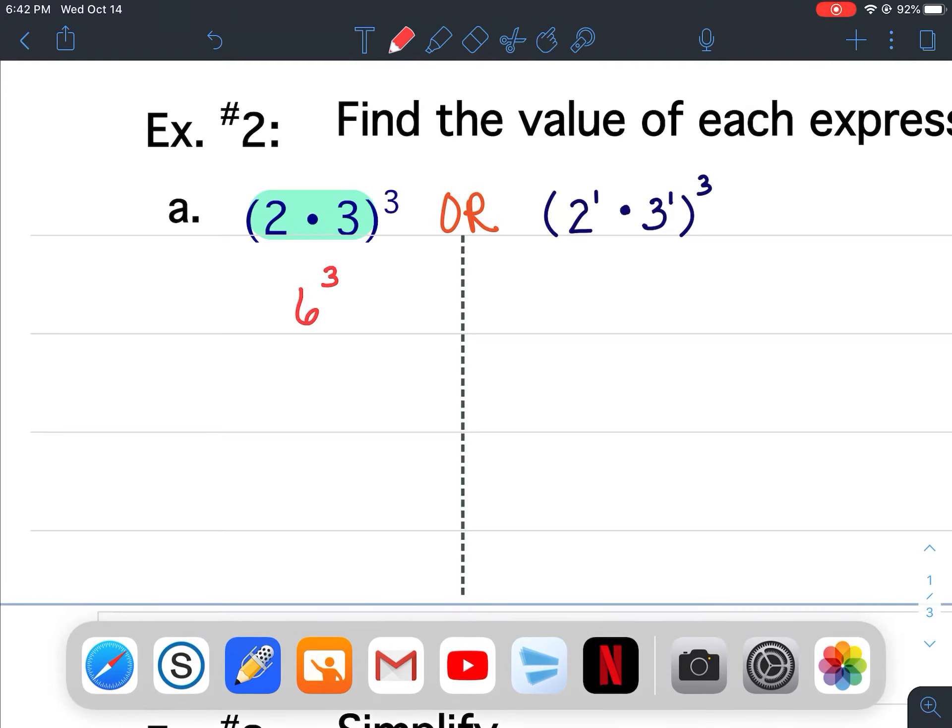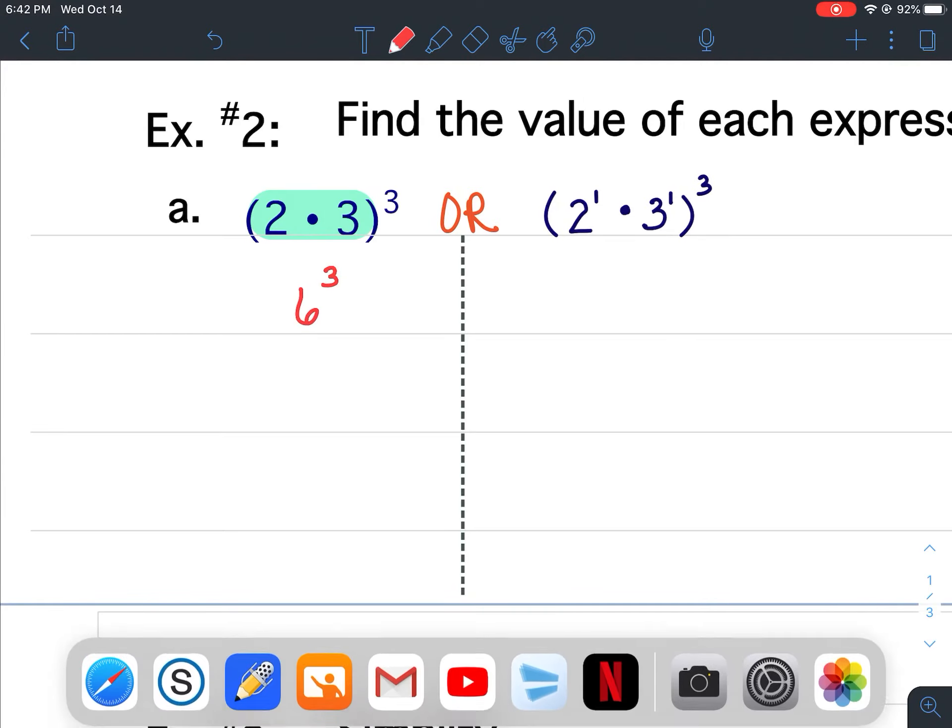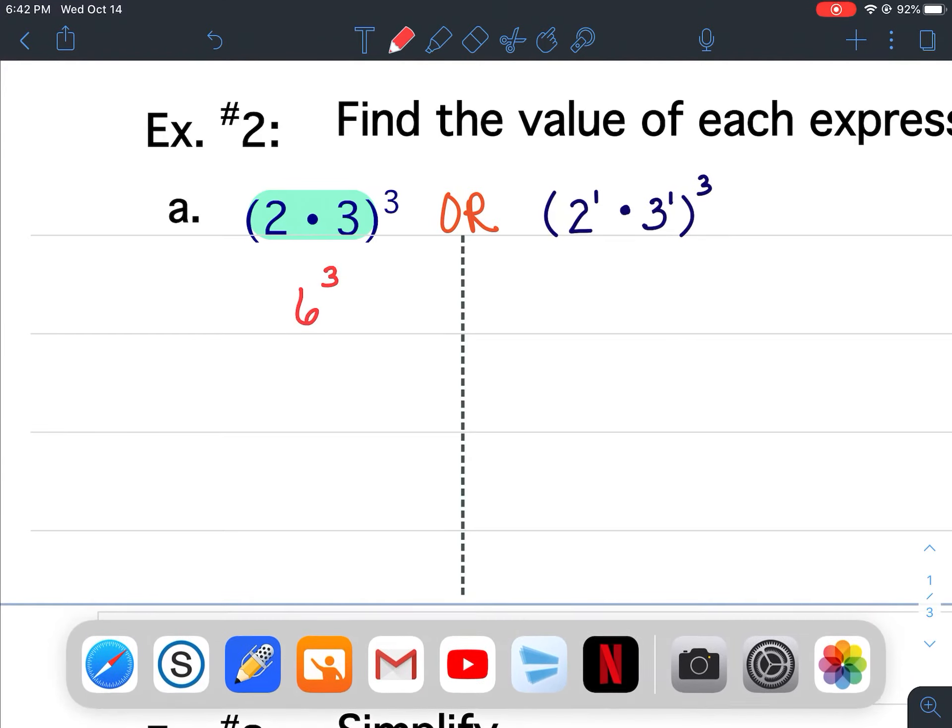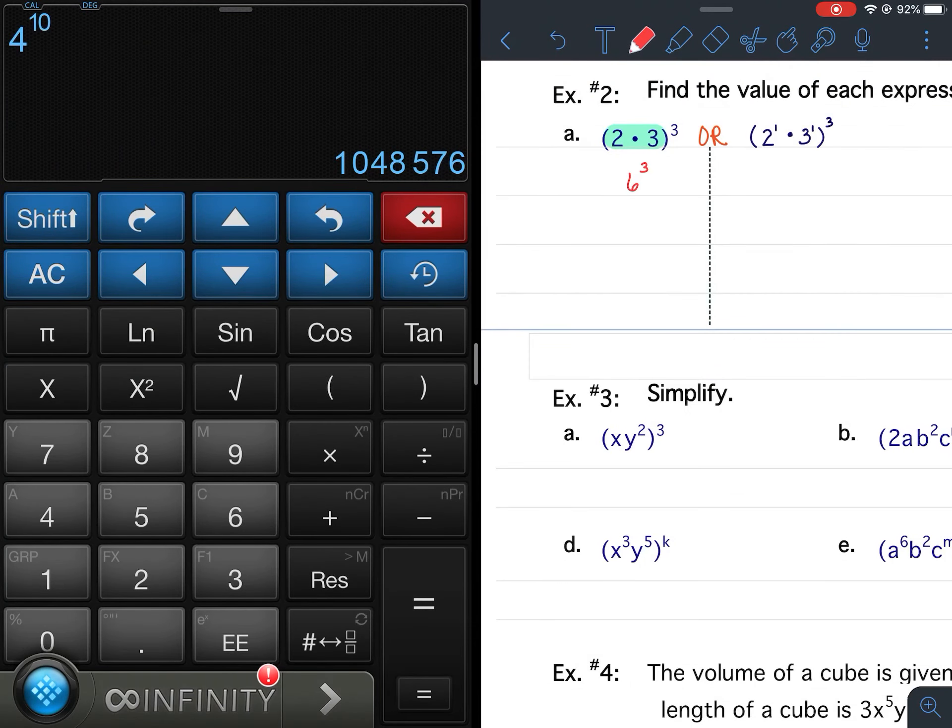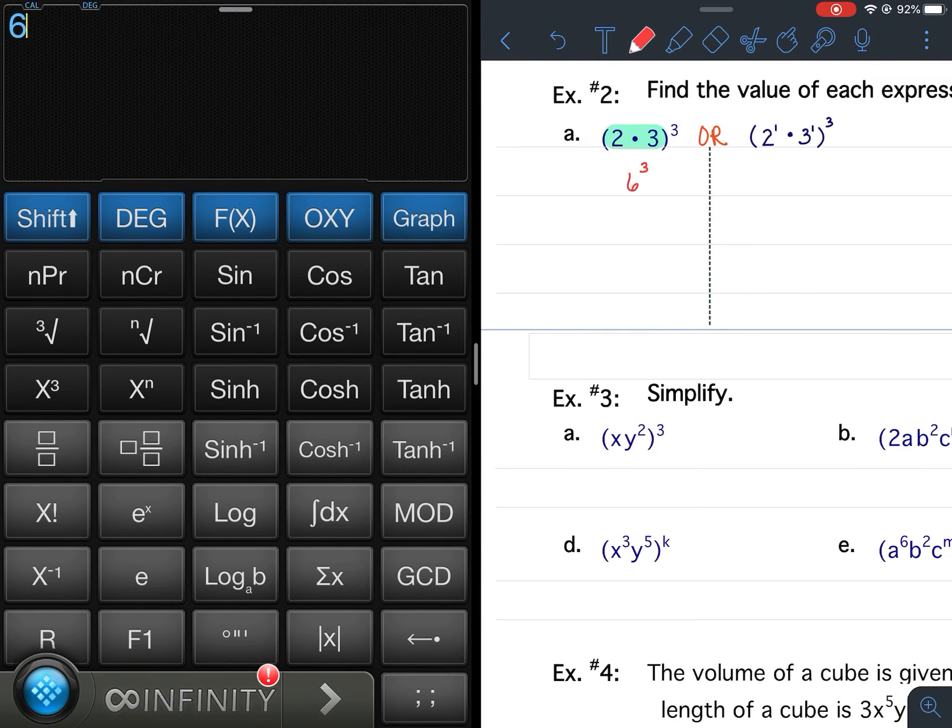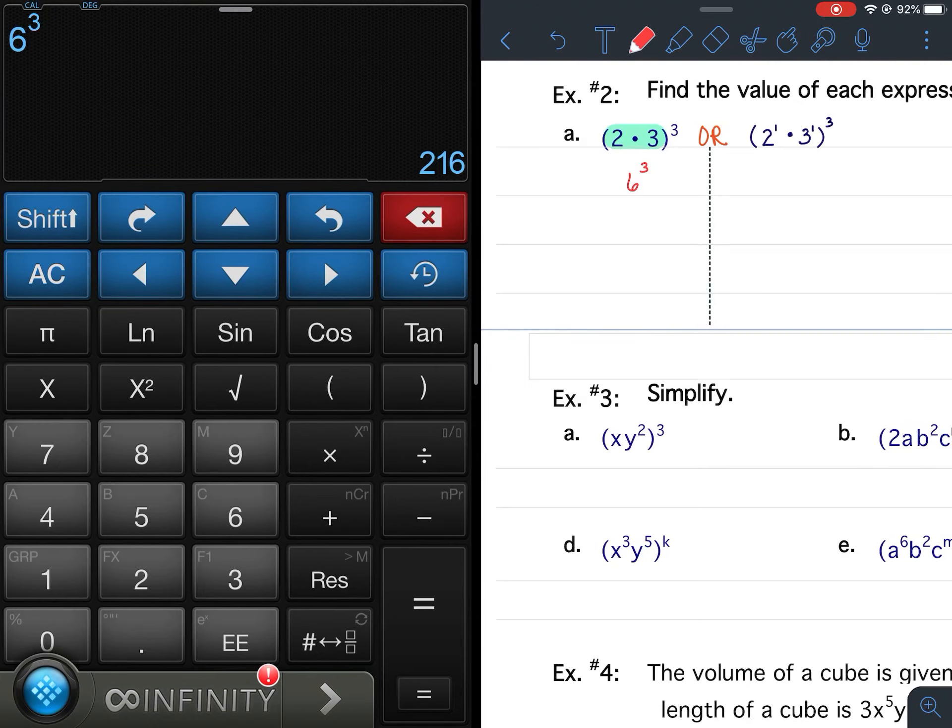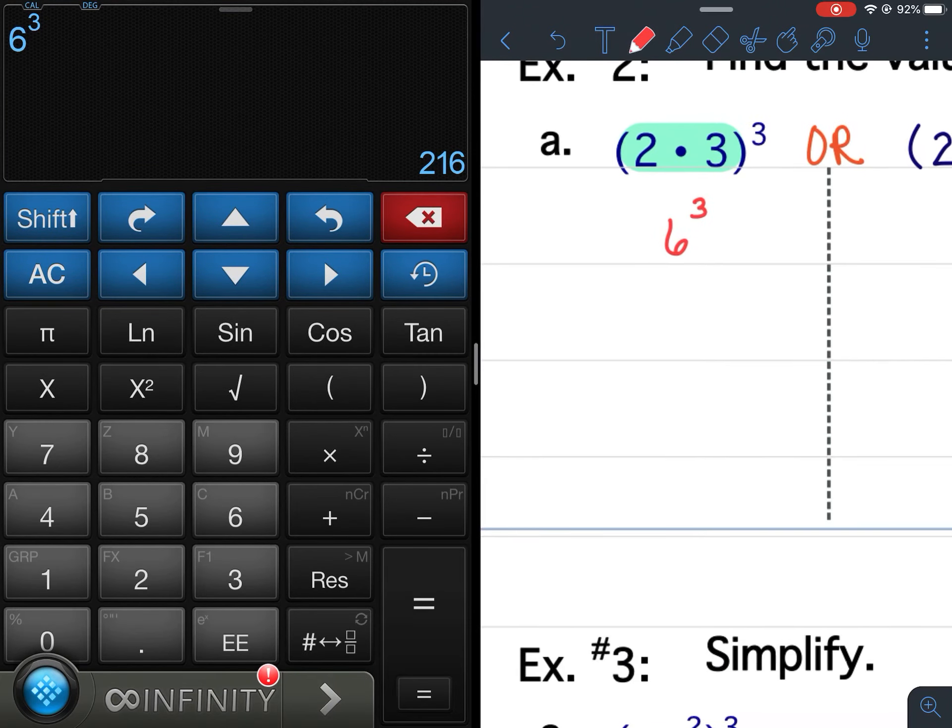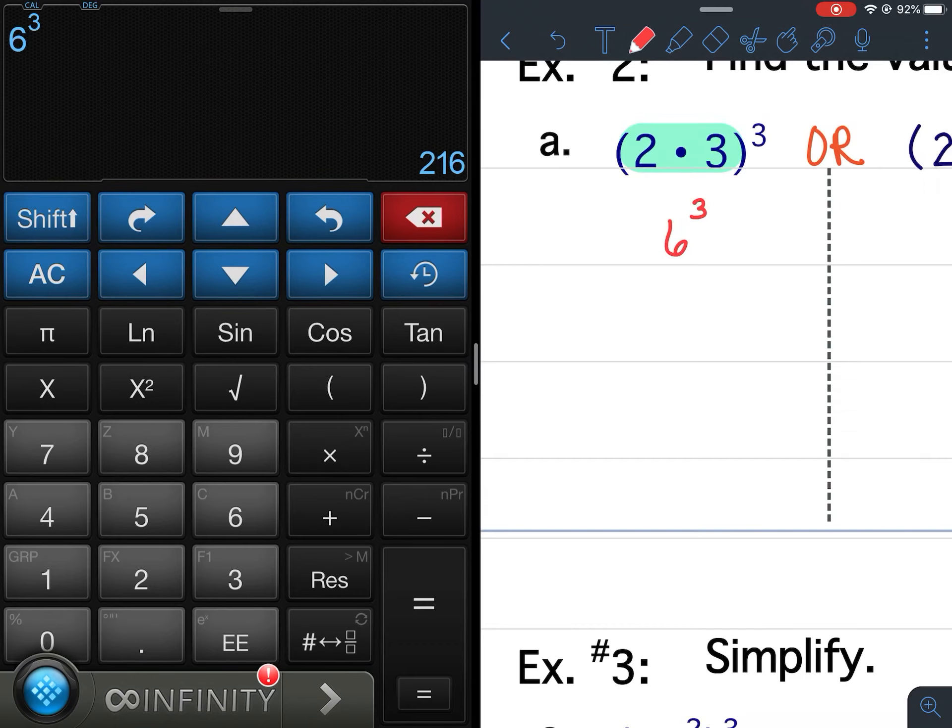And 6 raised to the third power, or 6 cubed, is 216. So for A here, I get 216.